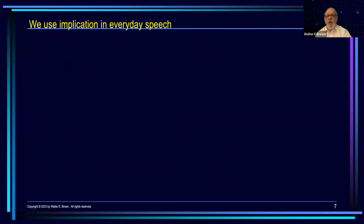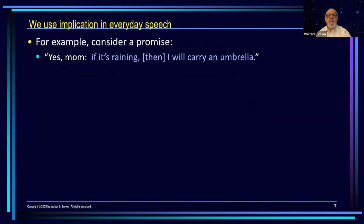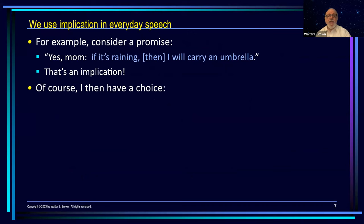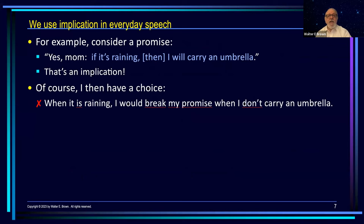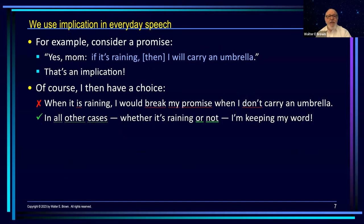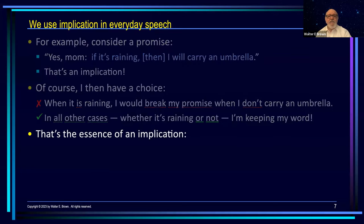We use Implication all the time in our daily speech, for example every time we make a promise. Consider this example: if it's raining, I will carry an umbrella. That's an implication. Having made that promise, I have a choice. If it is raining and I don't carry an umbrella, I have broken my promise. But in all other cases, I am keeping my word independently of whether it is raining or not. That's the essence of an implication.